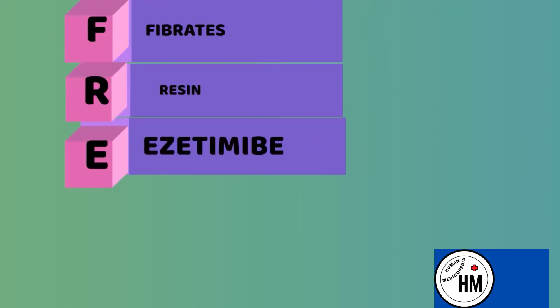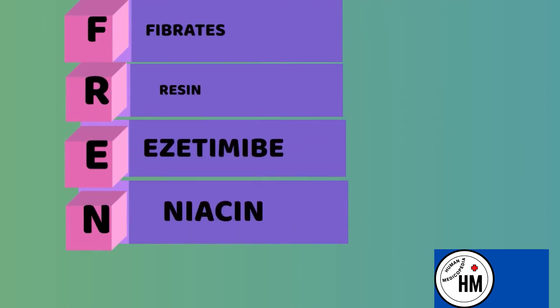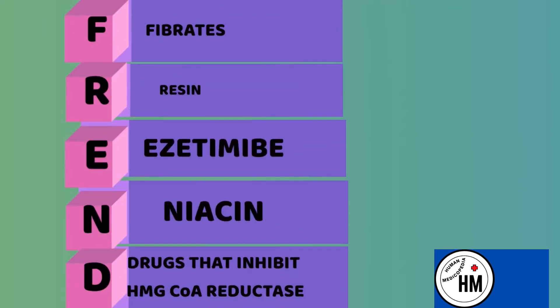R — resin, E — ezetimibe, N — niacin, and D&S — drugs that inhibit HMG-CoA reductase enzyme. That was all about lipid lowering drugs. I hope you liked the video.